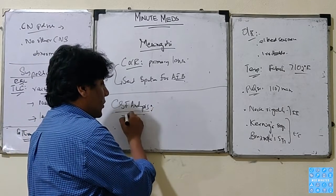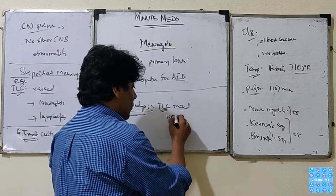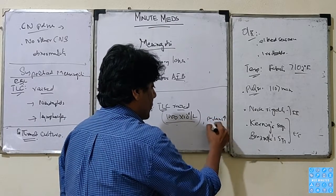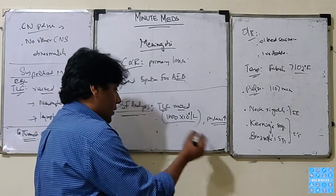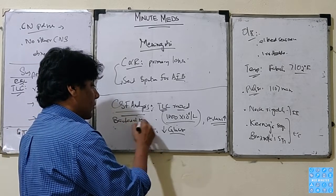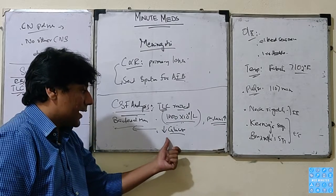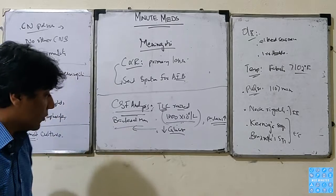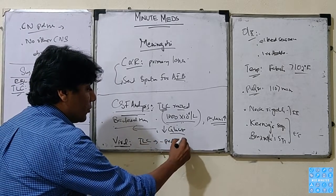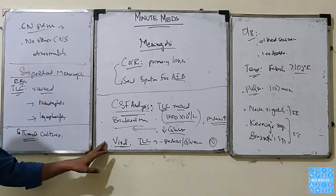On CSF analysis, if the total leukocyte count is raised with predominant neutrophils — raised up to 1000 × 10⁶ cells per litre — with increased proteins compared to serum proteins, and there is a decrease in sugar levels, this is a picture of typical bacterial meningitis. The bacteria have consumed the glucose so glucose levels are down. For viral meningitis, the total leukocyte count is raised but not as much, and the proteins and glucose are both normal — this points towards a viral cause.